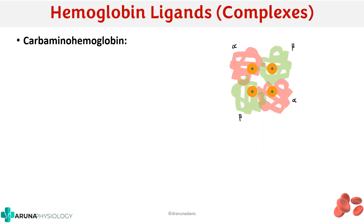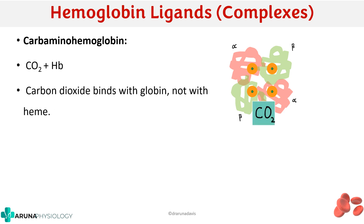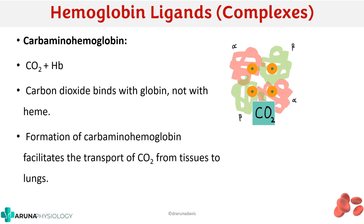The next important derivative is carbaminohemoglobin, which we already mentioned. When carbon dioxide combines with hemoglobin, we have carbaminohemoglobin. Importantly, carbon dioxide combines with the globin part and not with the heme, whereas oxygen combines with the heme. The formation of carbaminohemoglobin facilitates the transport of carbon dioxide from tissues to the lungs.